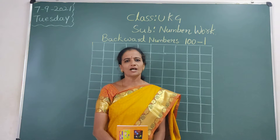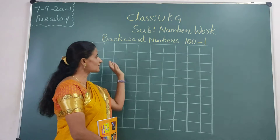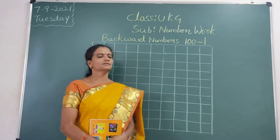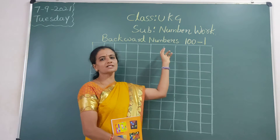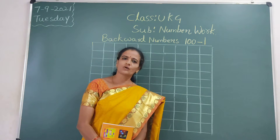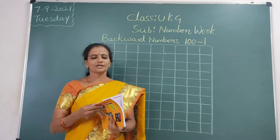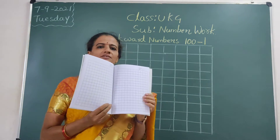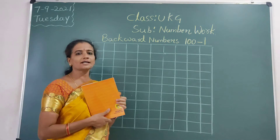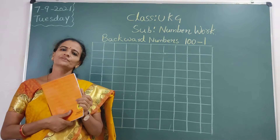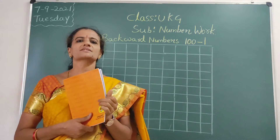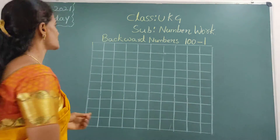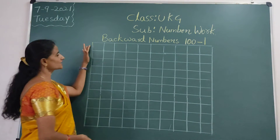So today we are going to learn backward numbers 100 to 1. Backward numbers, 100 to 1. Now take out the word number 1 class word, so we can start children. Backward numbers — reverse numbers.